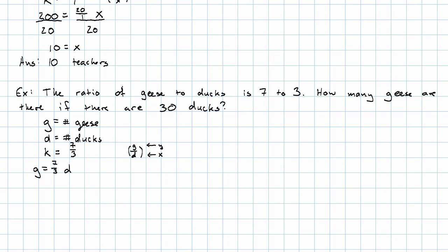In this problem, I'm told how many ducks there are, and I want to find how many geese there are. So I'm going to say G is 7 thirds times 30. Putting that into my calculator if I like, or working it out by hand, I get 70. So there are 70 geese.